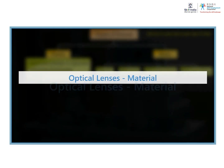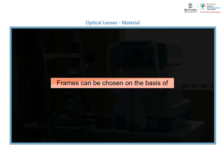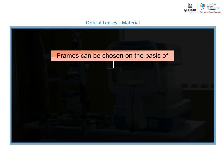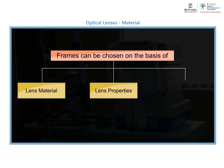Optical lenses can be classified on the basis of material. You can choose a lens based on the material it is made of, the properties or features of the lens, and the coating on the lens. Let's learn more about each of these.